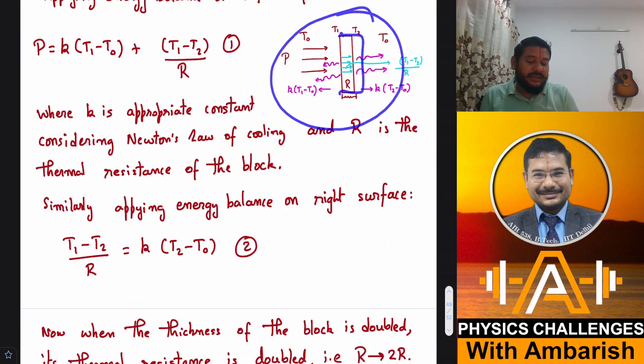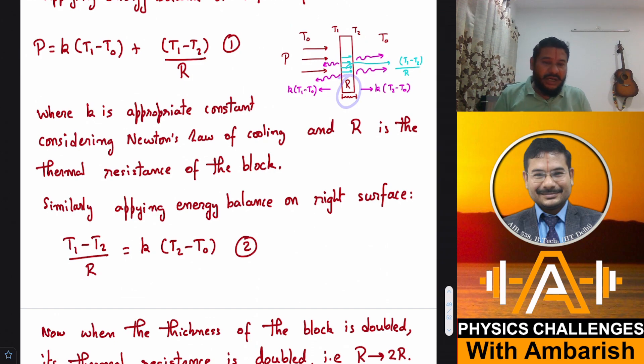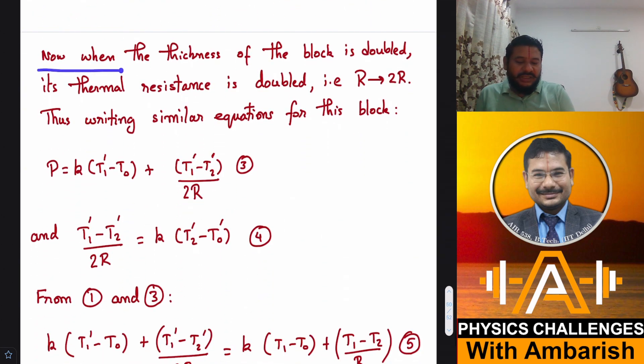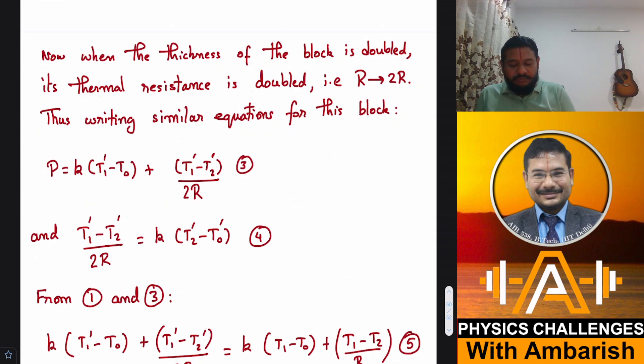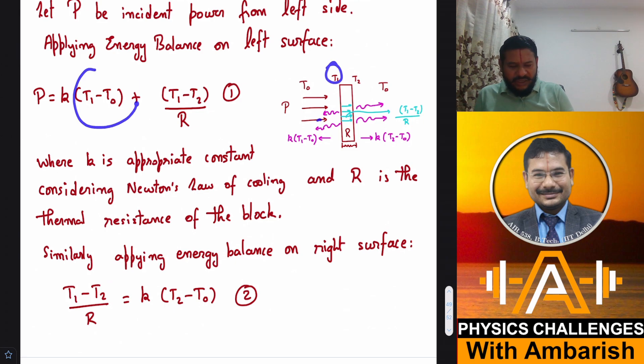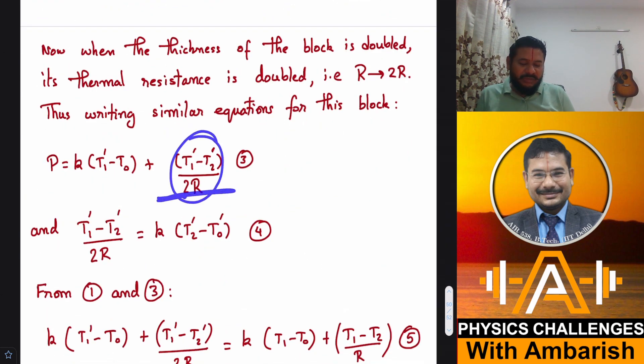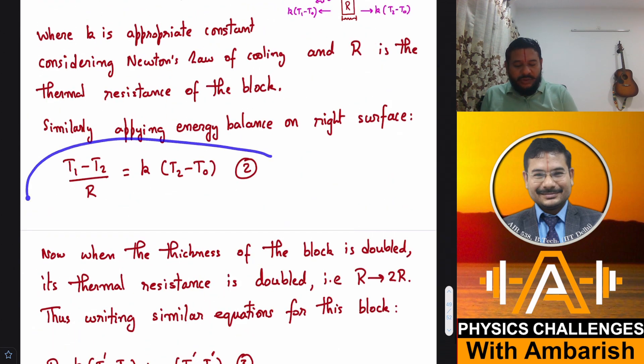Right hand side is receiving some energy through conduction and then it is giving out to the atmosphere according to Newton's law of cooling. So T1 minus T2 by R should be equal to K times T2 minus T naught. Now what happens when the thickness of the block is doubled? The thermal resistance is doubled. So we replace R by 2R. Thus writing the similar equations for this block.